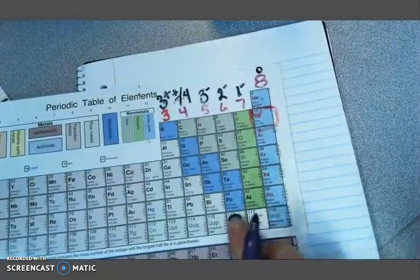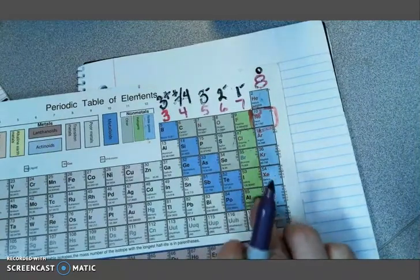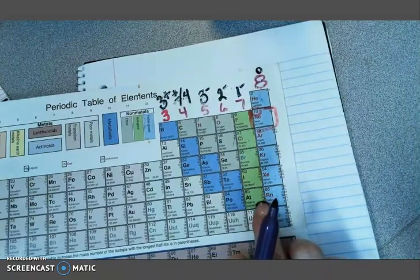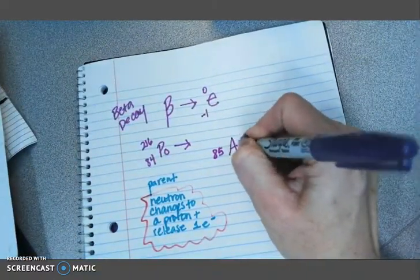And if I go on my periodic table, that means I'm going to go from polonium, 84, to astatine, which is 85. So this becomes astatine.